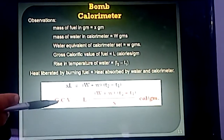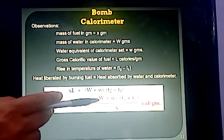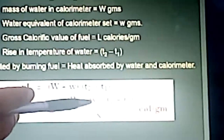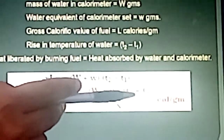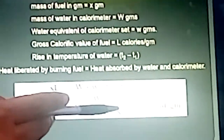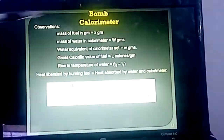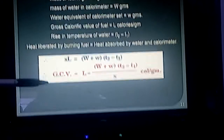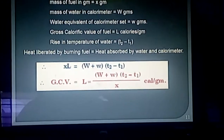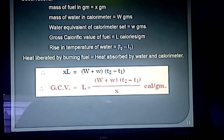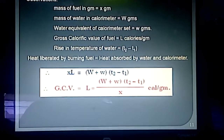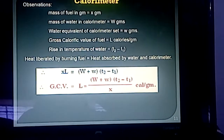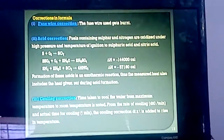In the GCV formula, capital W is the mass of water in the calorimeter, small w is the water equivalent of the calorimeter, t2 minus t1 is the rise in temperature, x is the mass of fuel in grams, and the unit is calories per gram. If you know the GCV, you can calculate the NCV using: NCV = GCV − 0.09 × H × 587. This is the calculation to determine the gross calorific value of solid and non-volatile liquid fuel.